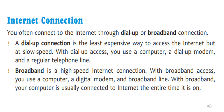With broadband, a high-speed internet connection is provided. For broadband access you need a computer, a digital modem, and a broadband line. With broadband, your computer is usually connected to the internet the entire time it is on. It means if your broadband is on and your modem is on, then you can use the internet, and it will give you very high and good speed.